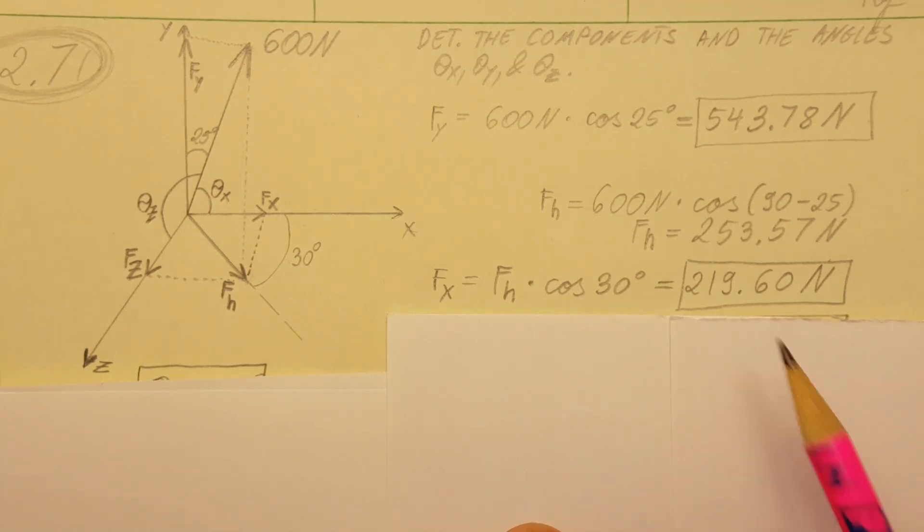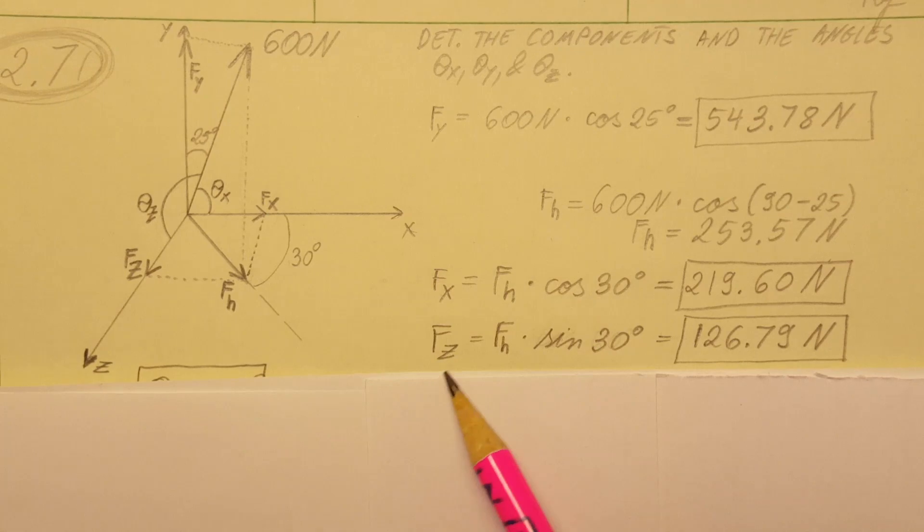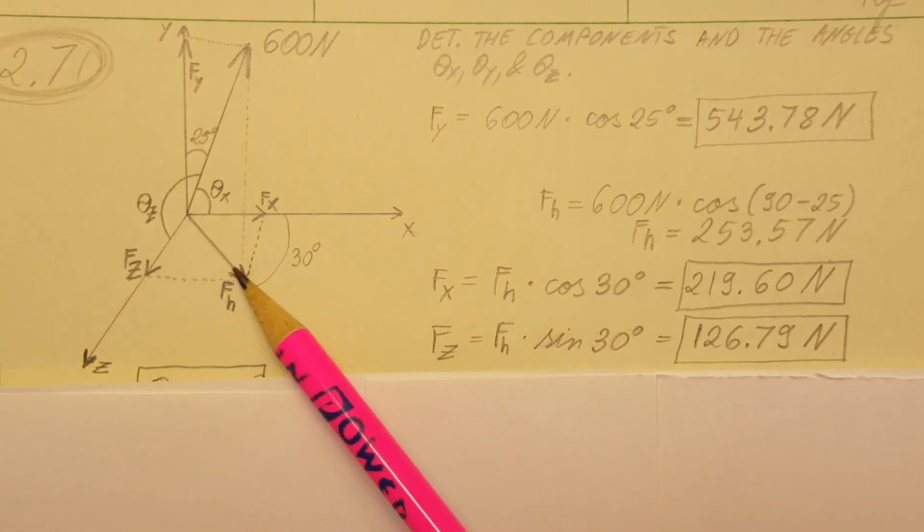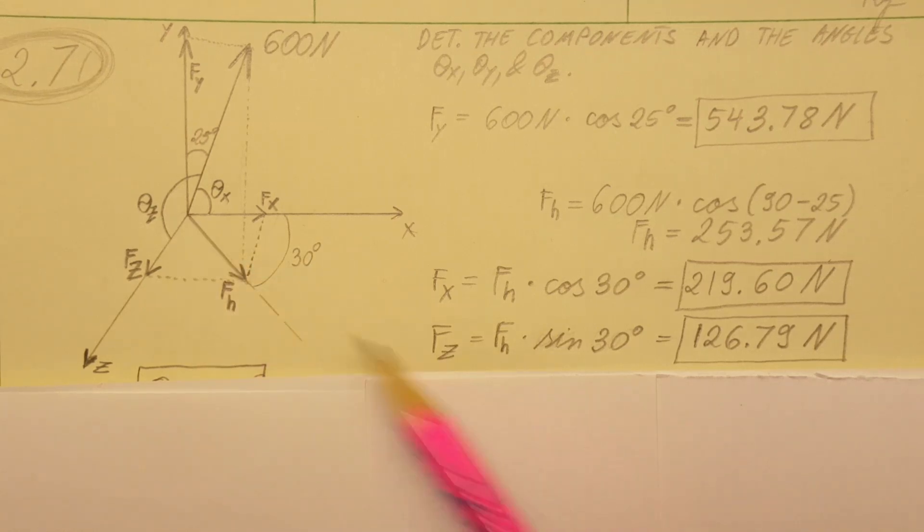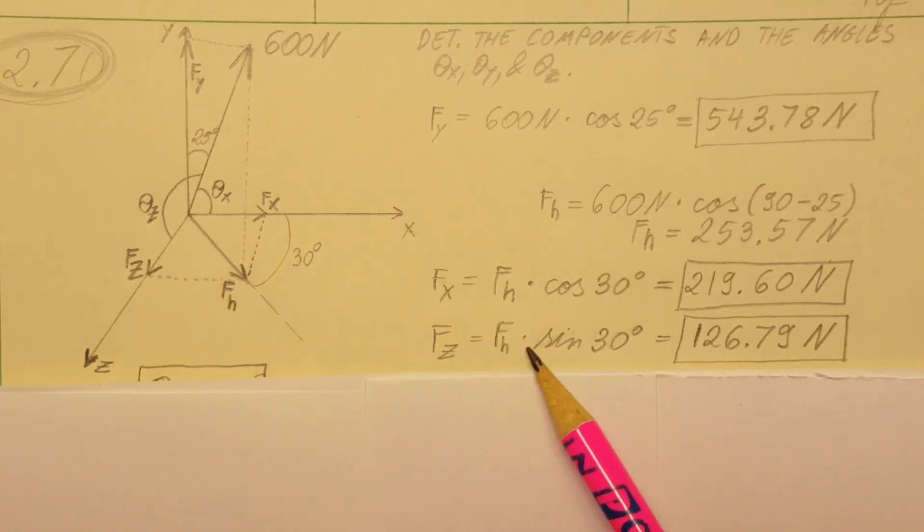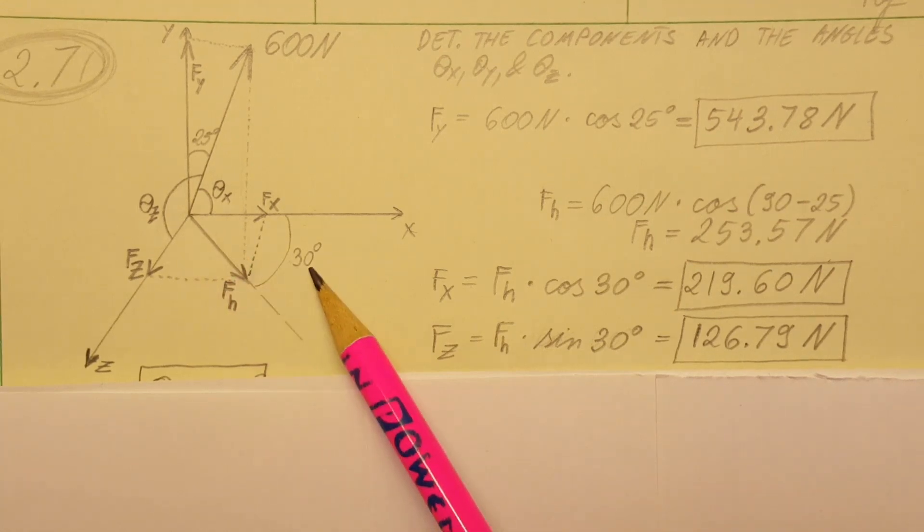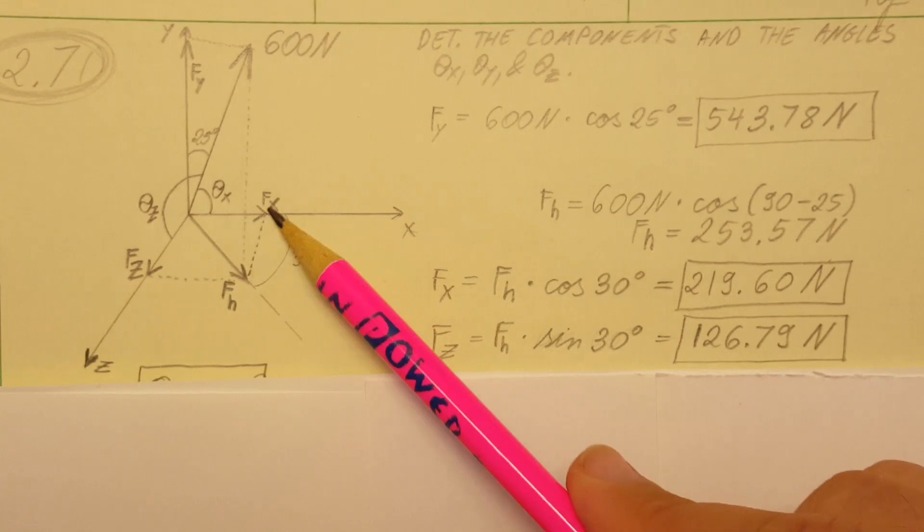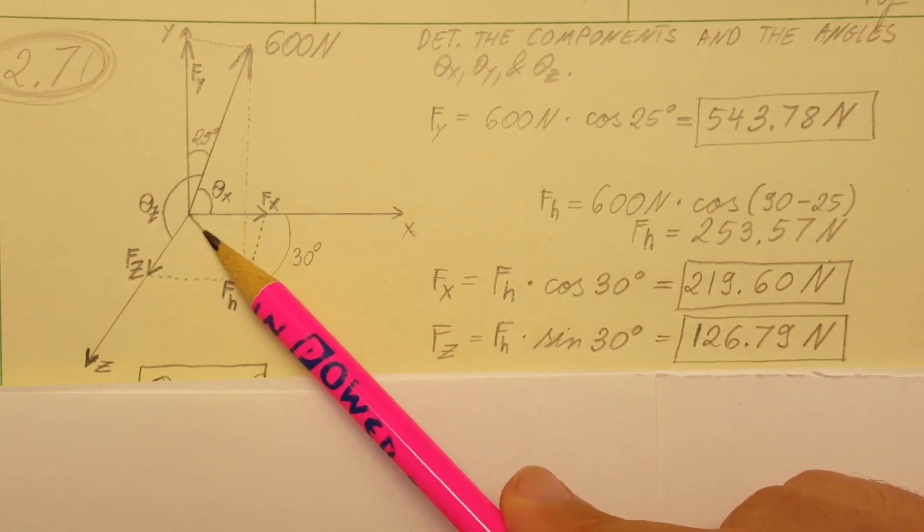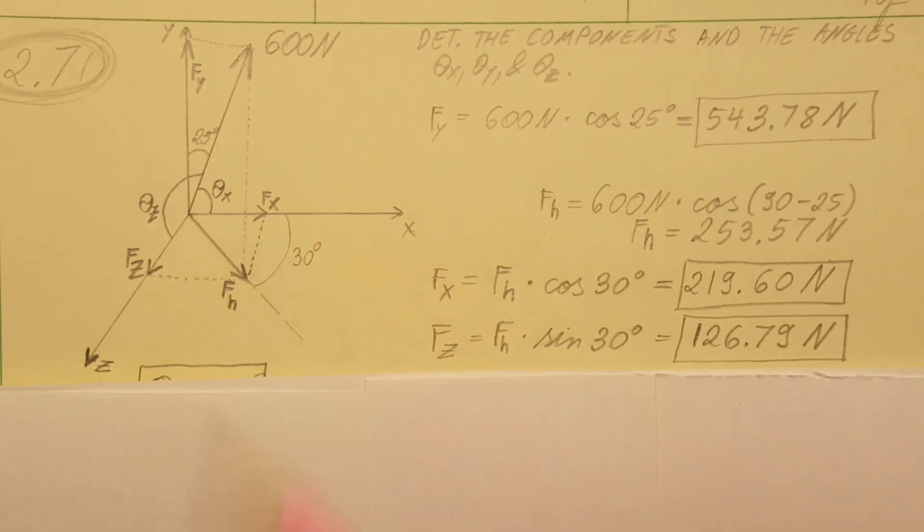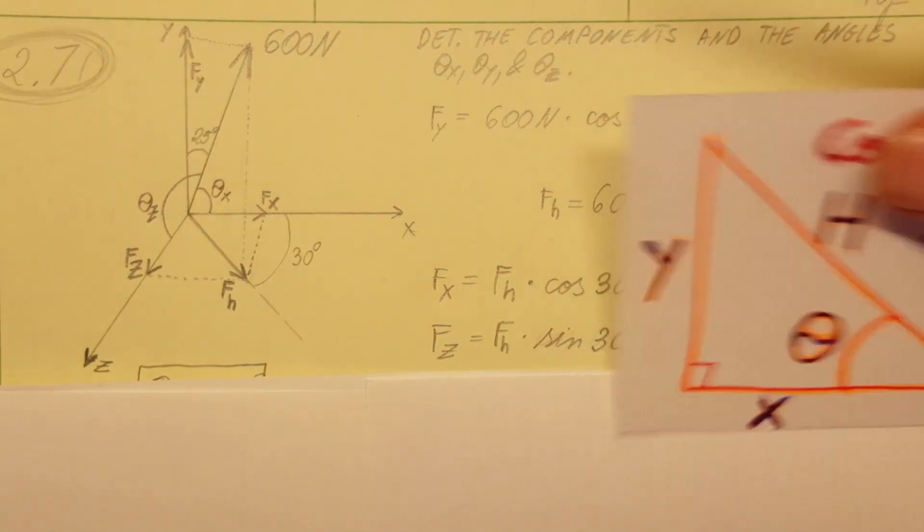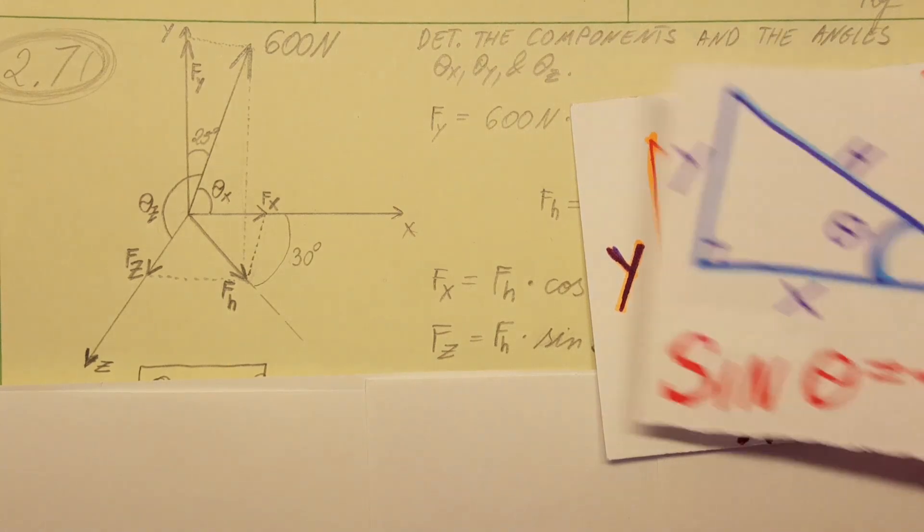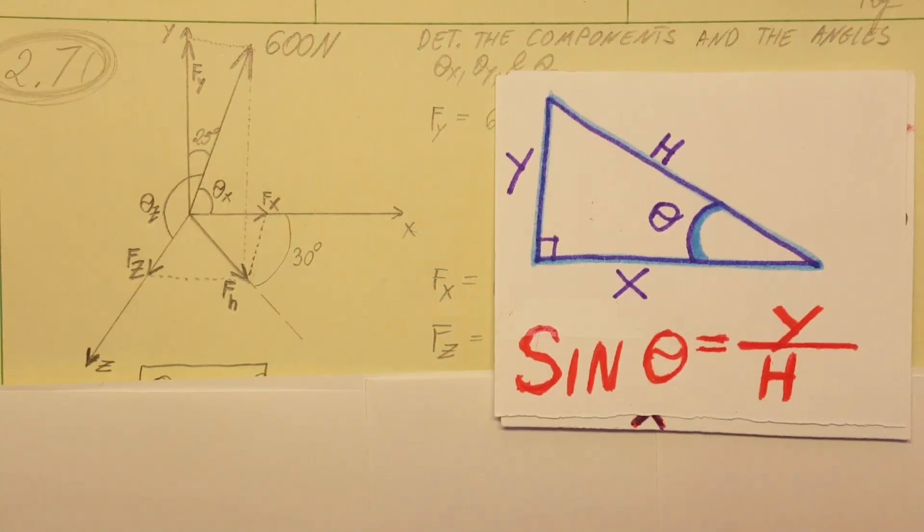Fz, we're going to use this triangle right here. We can go ahead fh times sine of 30. We know this angle, so this is the same as this. So we can use this angle and sine of 30. So instead of the cosine formula we used sine formula, and that's all we changed.